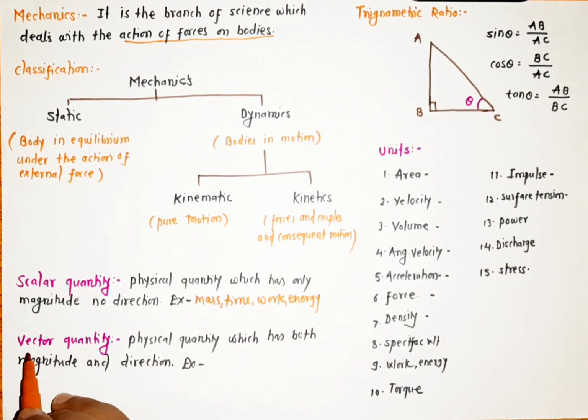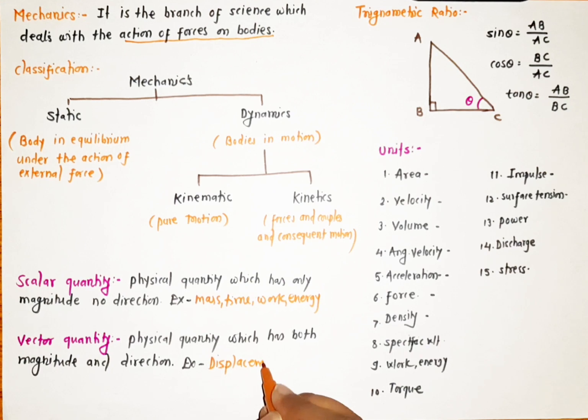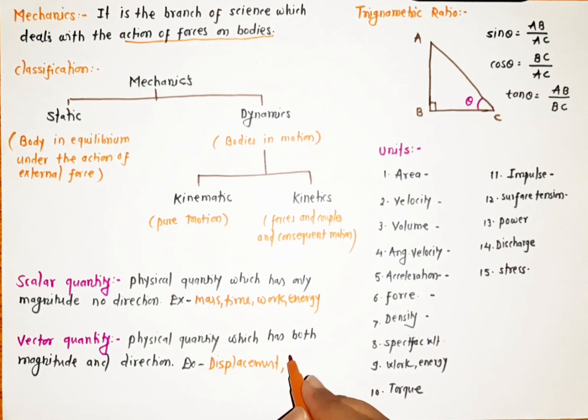Then there are vector quantities. Vector quantities are physical quantities which have both magnitude and direction, just like displacement, velocity, acceleration...